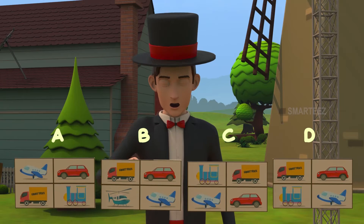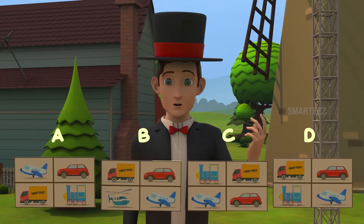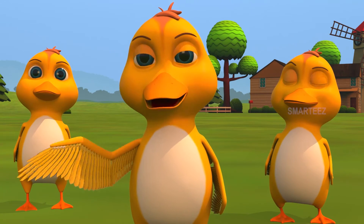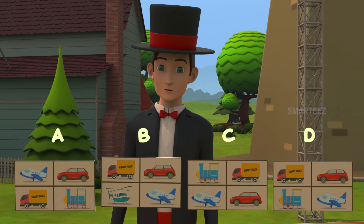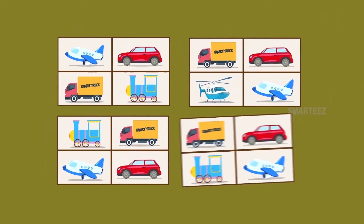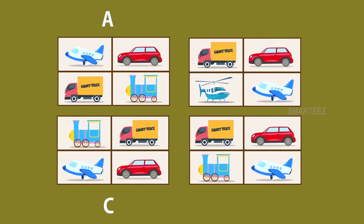It's B. Wow, that's perfect. How did you find it so quickly? I saw the helicopter. That's not found in other pictures. Exactly. Let's give a big round of applause. There were four toys in all the pictures. Pictures A, C and D had the same toys — namely, a toy airplane, a toy car, a toy truck and a toy train engine — even though they were not in the same order. But picture B had a different toy, namely the helicopter.